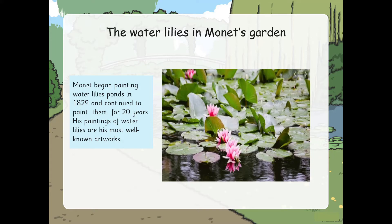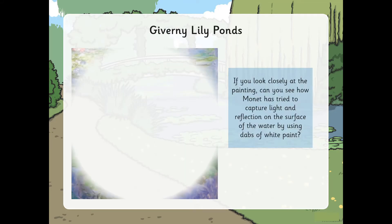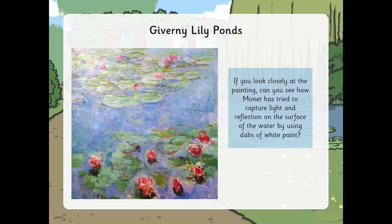Let's have a look at a painting of his water lilies. If you look closely at the painting, can you see how Monet has tried to capture light and reflection on the surface of the water by using dabs of white paint? This was one of his favourite techniques to create the effect.